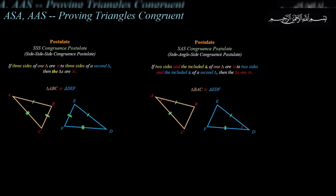In that line of reasoning, we talked about two postulates — the side-side-side congruence postulate and the side-angle-side congruence postulate — because it's cumbersome to prove triangles congruent by definition alone. The side-side-side postulate states that if three sides of one triangle are congruent to three sides of a second triangle, then the triangles are congruent. This is easier because you don't have to worry about the angles.